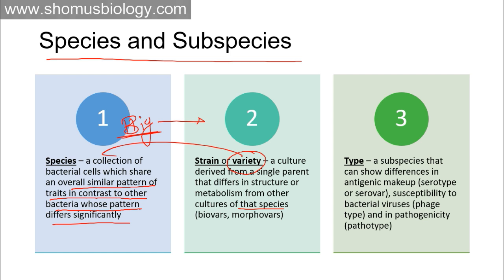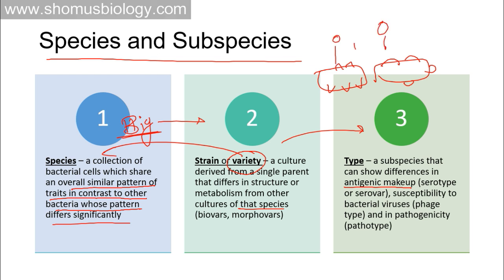If you break a variety further, you get a type. A type is a subspecies that can show differences in antigenic makeup — called a serotype — and susceptibility to bacteriophage viruses, known as phage typing. Two different types of the same variety may be morphologically identical and have the same metabolism, but the antigens on their surface differ slightly, and the bacteriophage viruses that attack them are also different.